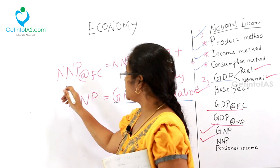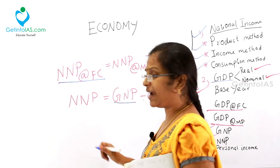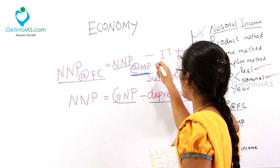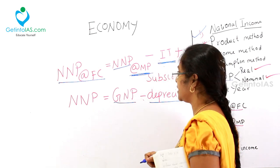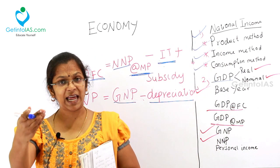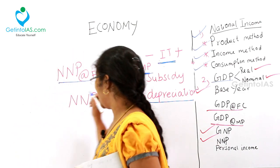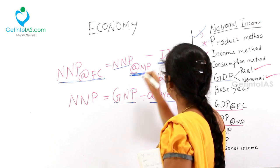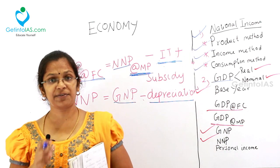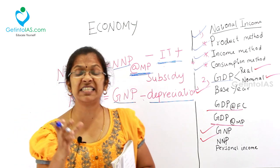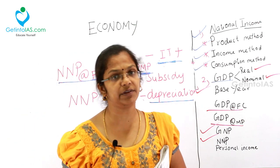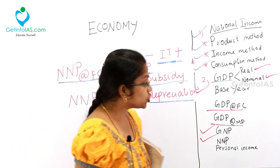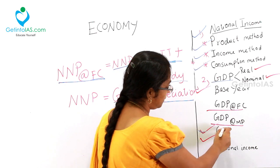NNP at factor cost can be written as NNP at market price minus indirect taxes plus subsidy — because it is inside the factory, so you subtract indirect taxes and add the subsidy amount given by the government.